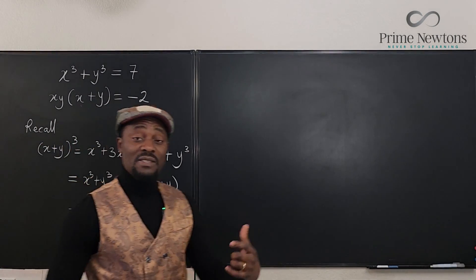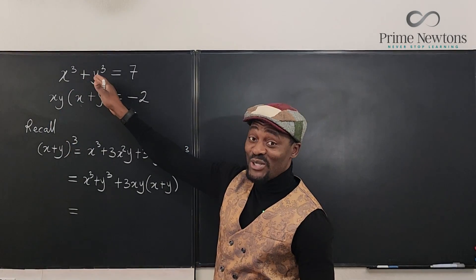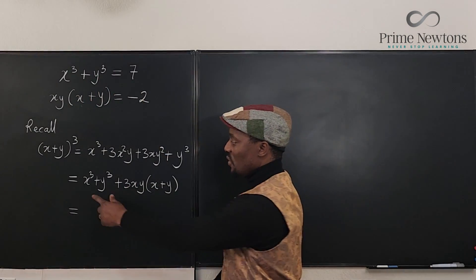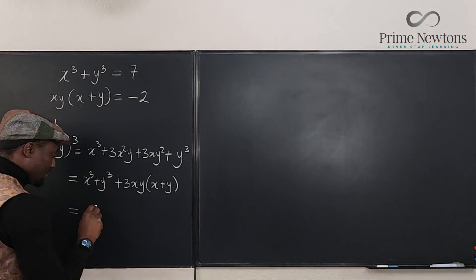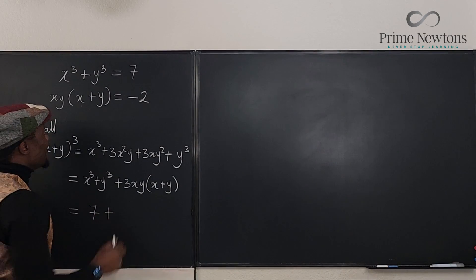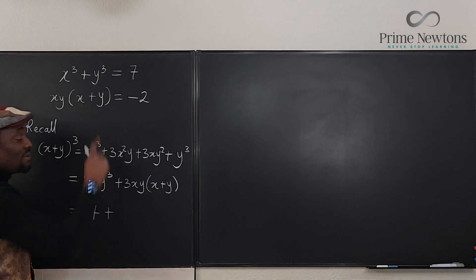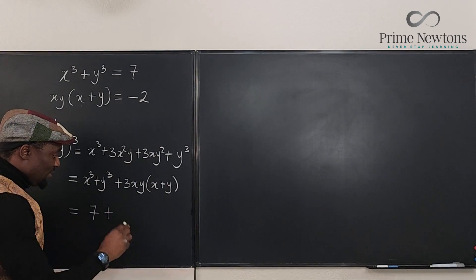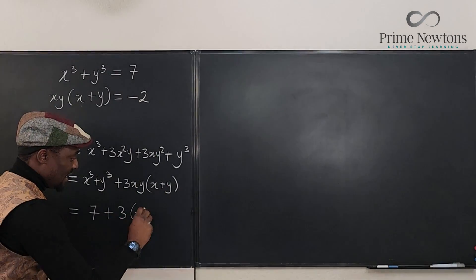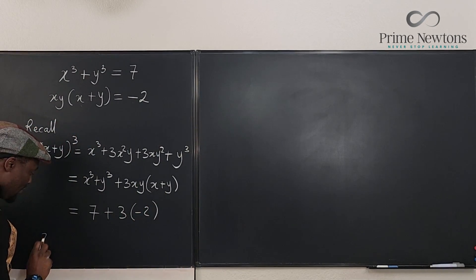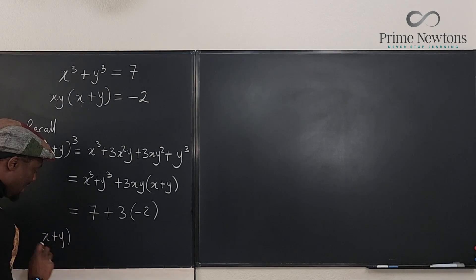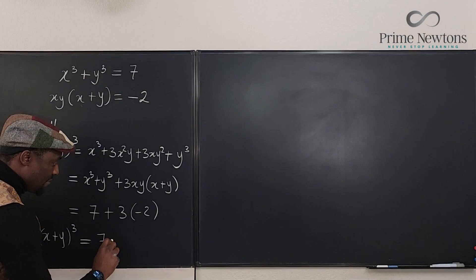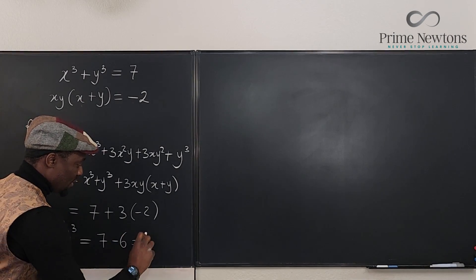Now based on what we have seen from the original problem, x cubed plus y cubed is 7. So I can replace this with 7. And they've told us that xy times (x + y), which is what you have here, is negative 2. So this is 3 times negative 2. So clearly the cube of (x + y) is equal to 7 minus 6, which is equal to 1.